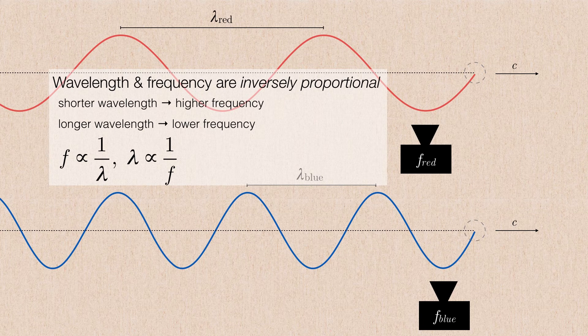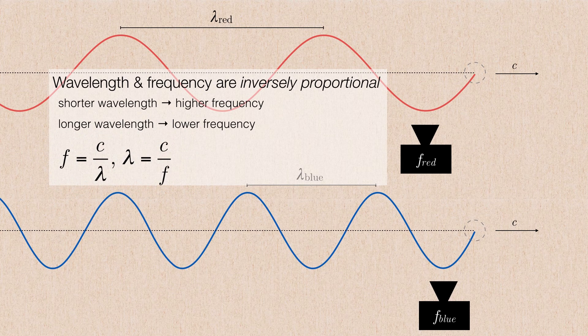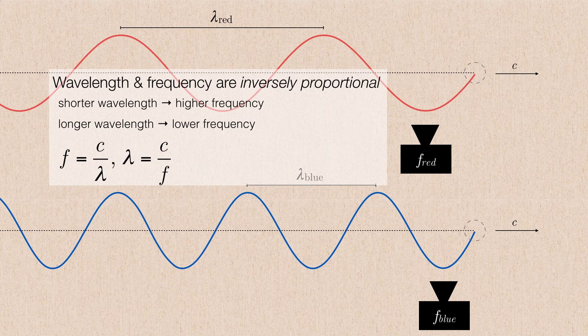But if we want to get rid of the proportionality and turn this into an actual equation that just lines up and makes sense, we need to consider what is constant about both of these examples. And the thing that is constant is that they both travel at the same speed, the speed of light. Therefore, the frequency is the speed of light divided by the wavelength, and the wavelength is the speed of light divided by the frequency.